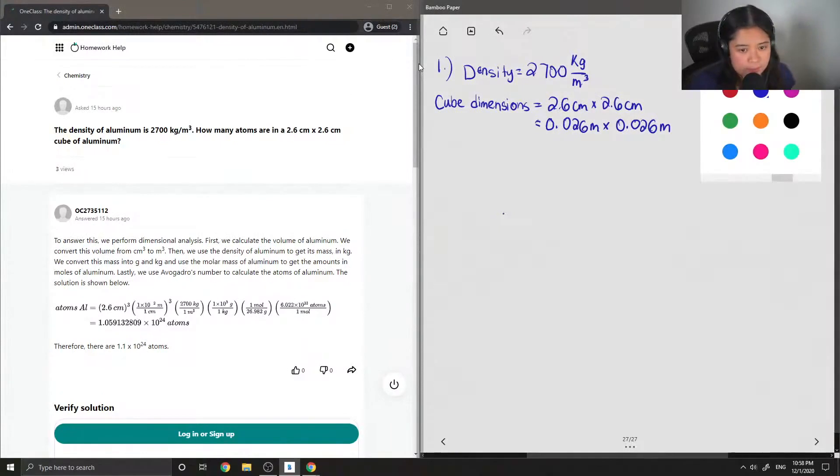So centimeters to meters makes it 0.026 meters x 0.026 meters x 0.026 meters. Like I mentioned earlier, this is a multi-step question. The first step is to find the volume of the cube.